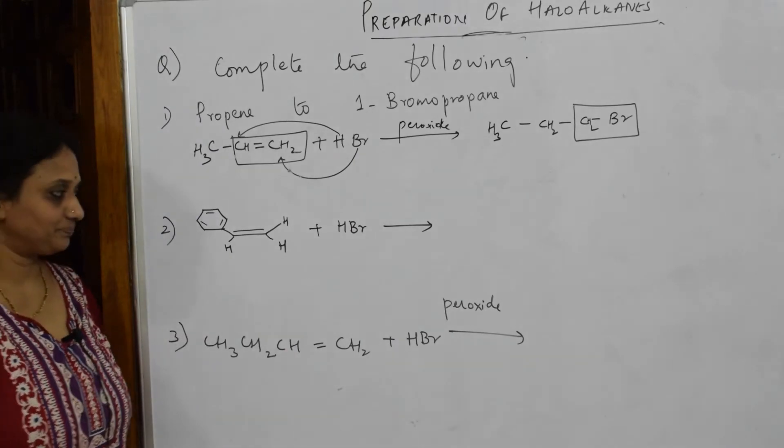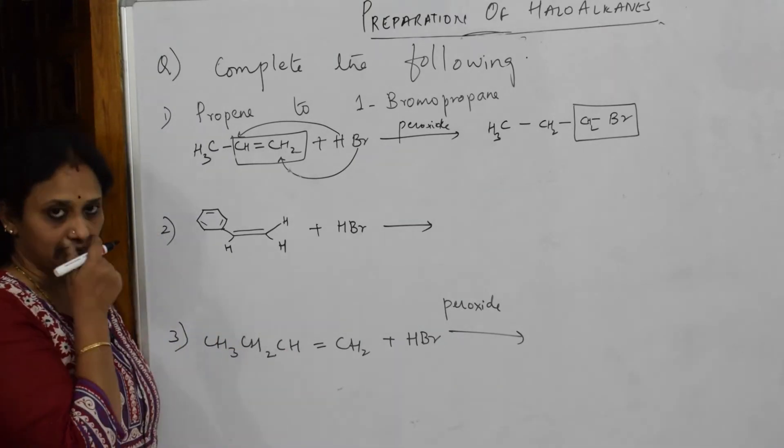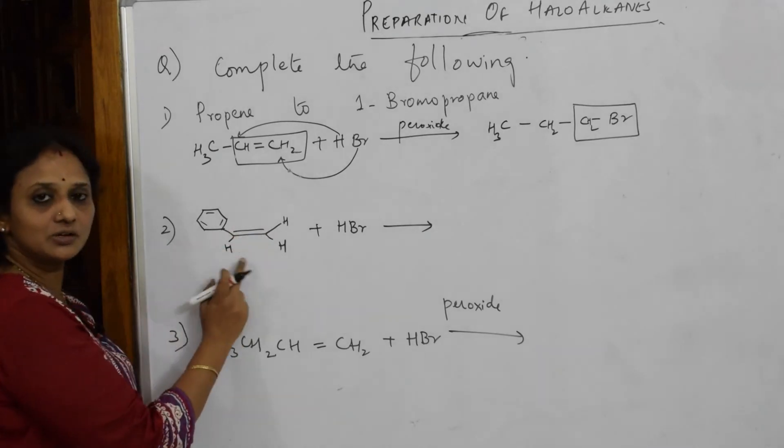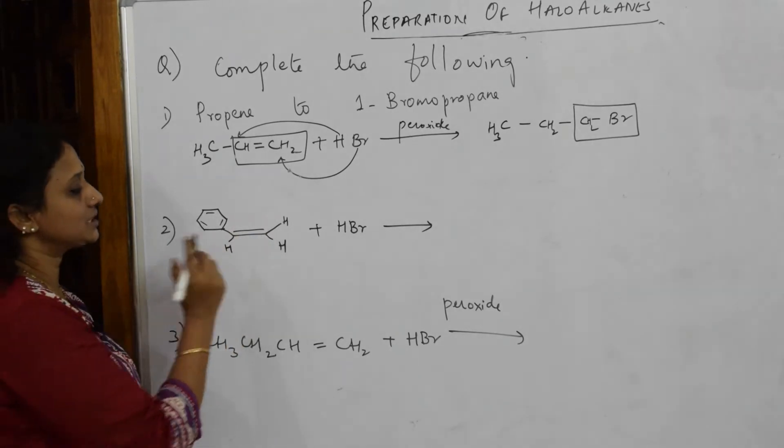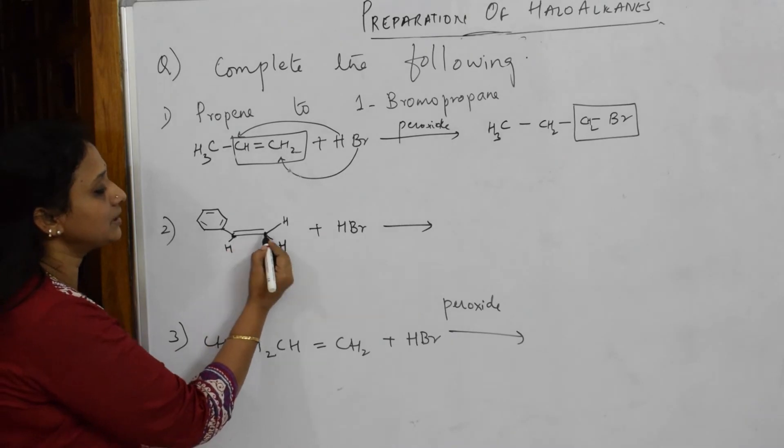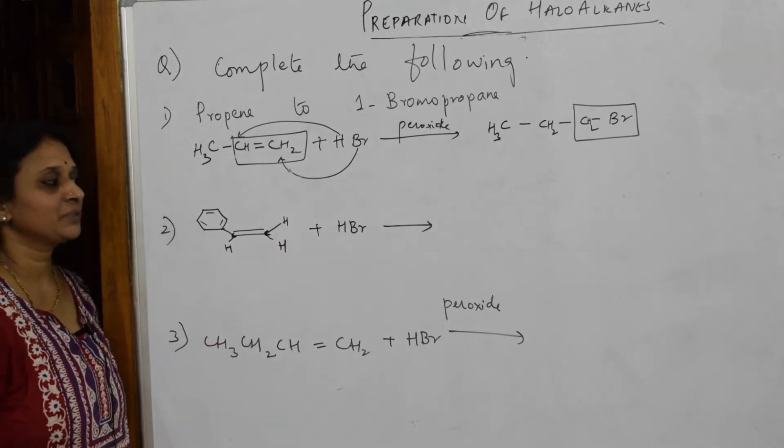Now let us write this. Now observe carefully. There's one compound given to us. Now bond line structures - this is called bond line structures. If carbon is not mentioned, it is understood. There is one carbon here, one carbon here.